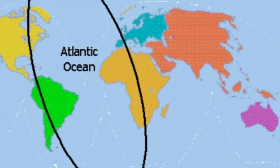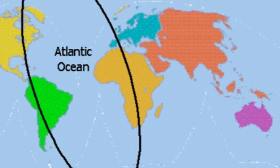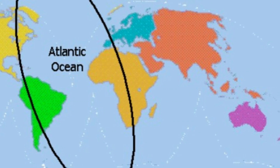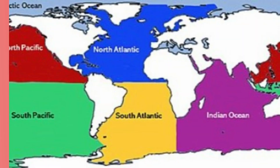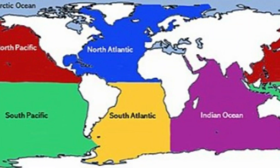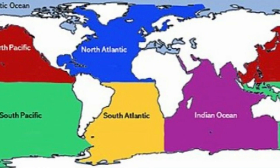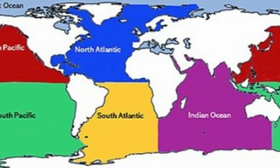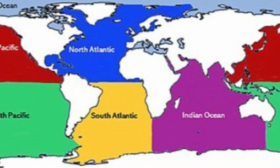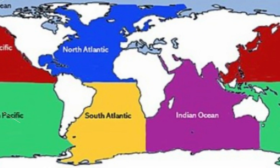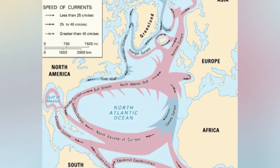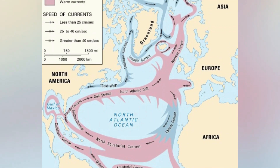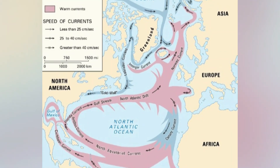One significant factor that differentiates these oceans is their size. The Atlantic Ocean is relatively smaller in area compared to the Pacific, which influences several characteristics, including temperature and salinity.